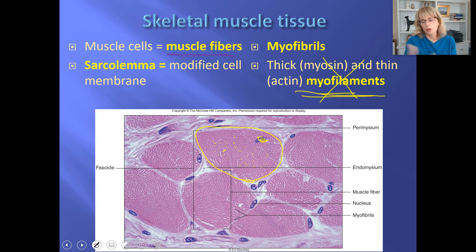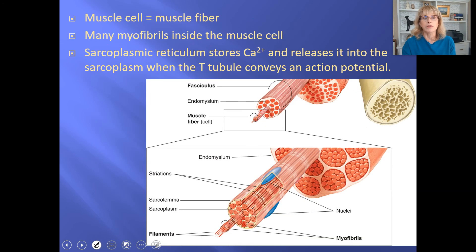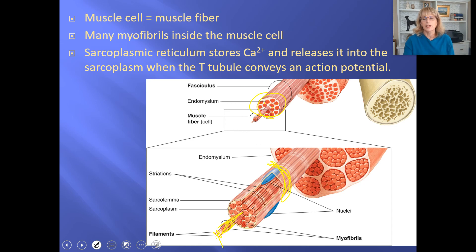This is just another image showing the same thing, that we have got a fascicle. The fascicle's got lots of individual muscle fibers. Here we've got one muscle fiber, and you can see its myofibrils, and it is made out of those myofilaments, smaller and smaller.